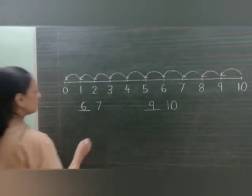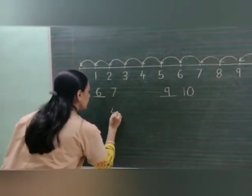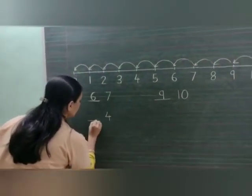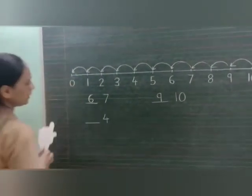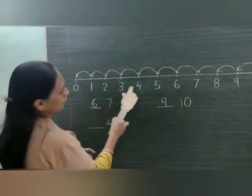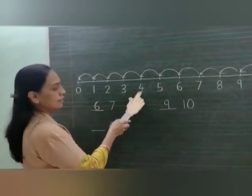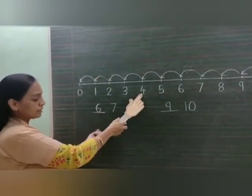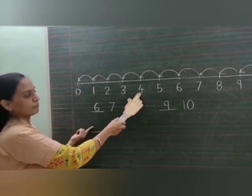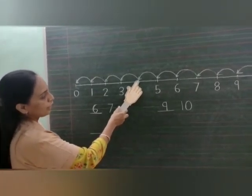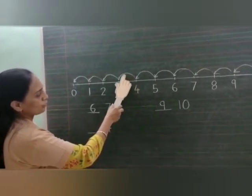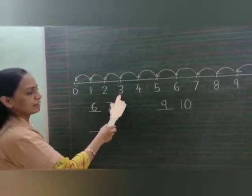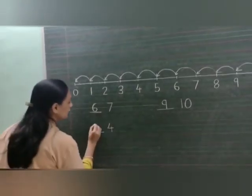Now let us take number 4. Find where number 4 is on the number line — it is here. Now find the number which comes before 4. We jump backwards, we go in reverse, and the number is 3.